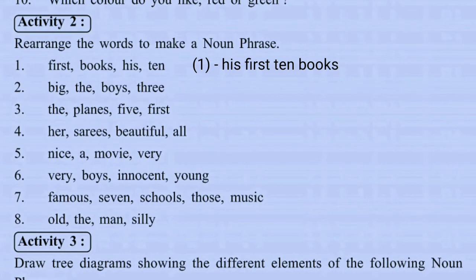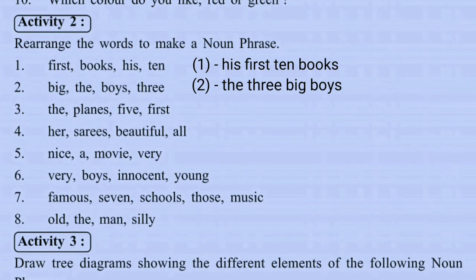For 'big', 'the', 'voice', 'three' — the head noun is 'voice', so the noun phrase is: the three big voices. For 'the', 'plains', 'five', 'fast' — the head noun is 'plains', so the noun phrase is: the five fast plains.